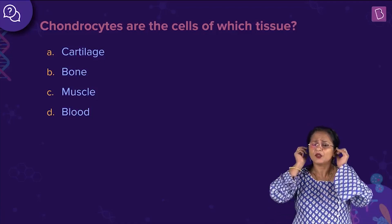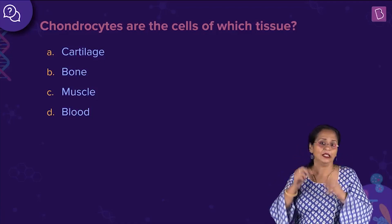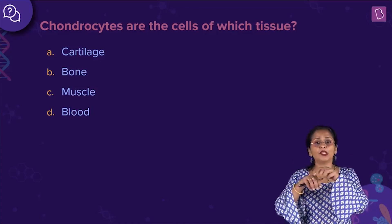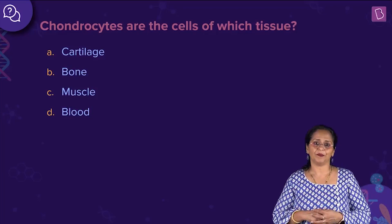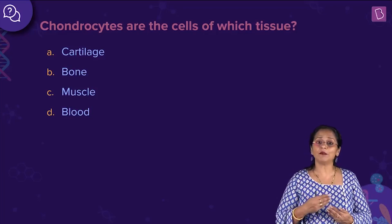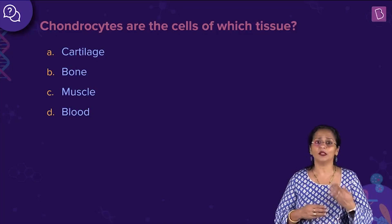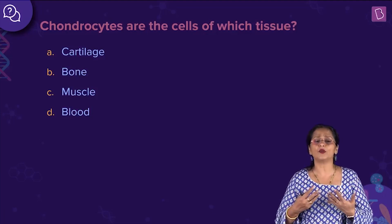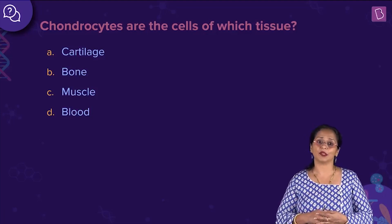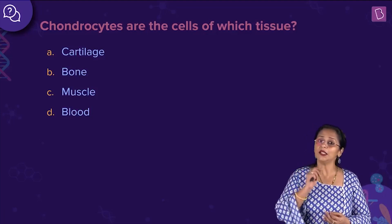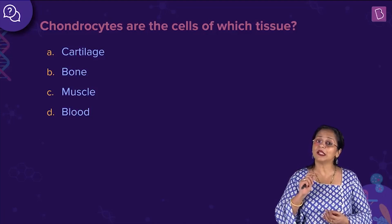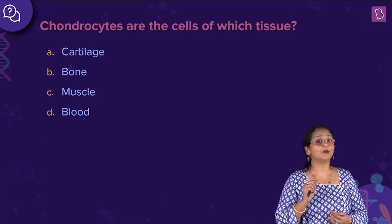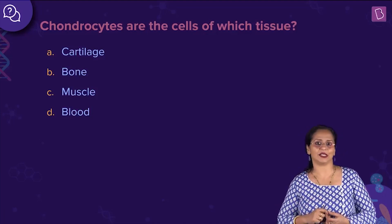Where do you find cartilage? You'll find it in your external ear, the pinna, the trachea, the larynx, and at the articulating joints. A newborn baby is born with nearly over 300 bones, and by the time we are adults, we are left with about 206 bones. Cartilage is made up of specialized cells called chondrocytes, while bones are made up of specialized cells called osteocytes.